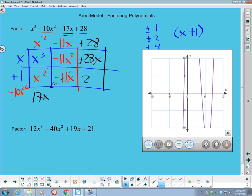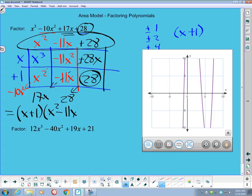And when I drop that down, I get a positive 28. And this matches with that, so I have no remainder, which means that I was able to factor out an x plus 1. And in the first part of my factoring then, I can write this as an x plus 1 times this piece. So that's my x² - 11x + 28.